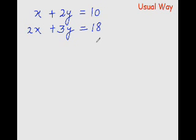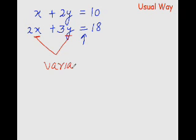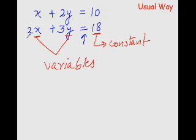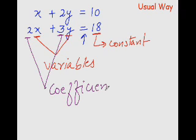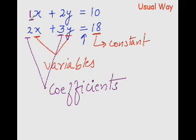Anything that has an equal to sign is called an equation. Now an equation has different parts. The alphabets that you are seeing, x and y, they are known as variables. This number that you are seeing here is known as a constant, and this 2 and 3 that you are seeing are known as coefficients — basically they are numbers that are put before the variables. When there is no number put before a variable, the coefficient is always 1, but we don't write 1; it is understood.